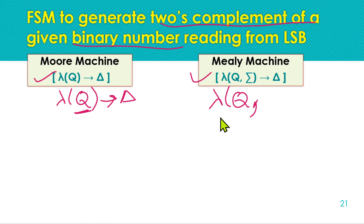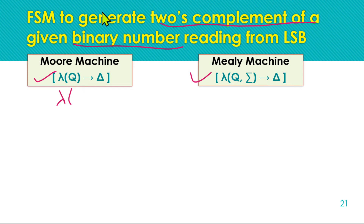First, let's discuss what we mean by reading a binary string from the LSB. For every finite state machine, we need to read from one end — either left to right or right to left. We cannot read from both sides simultaneously, so our main target is to read the string from one consistent direction.